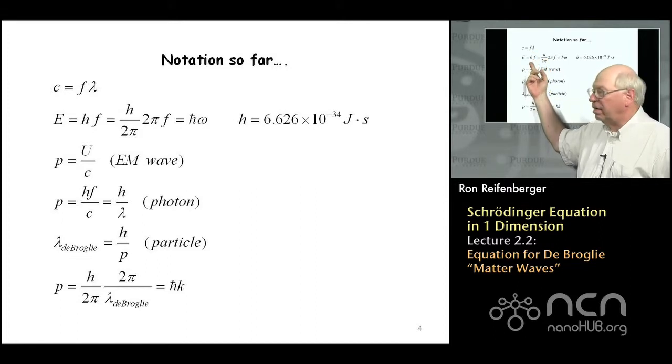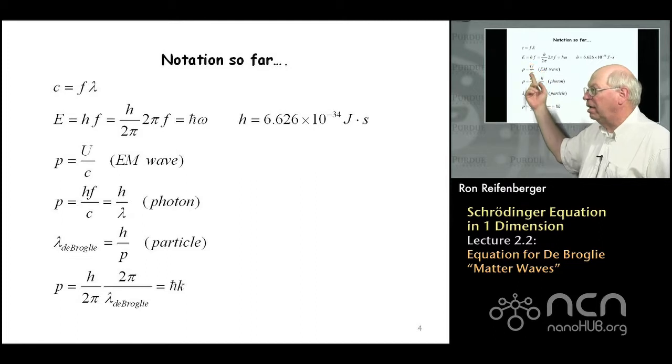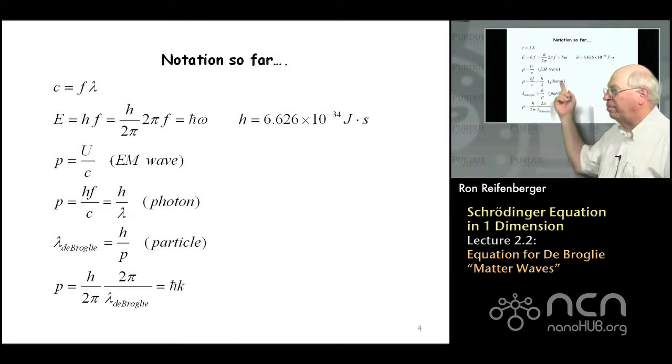The first equation here is the speed of light c equals the frequency f times the wavelength lambda of light. We've got the Planck-Einstein equation for the photon energy E equals hf.